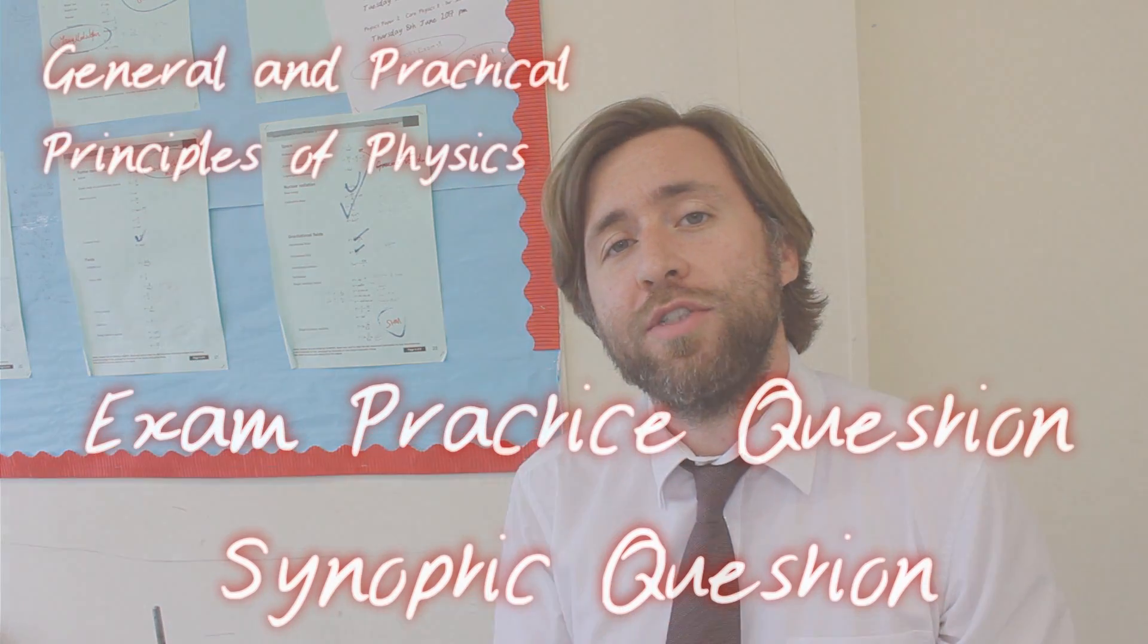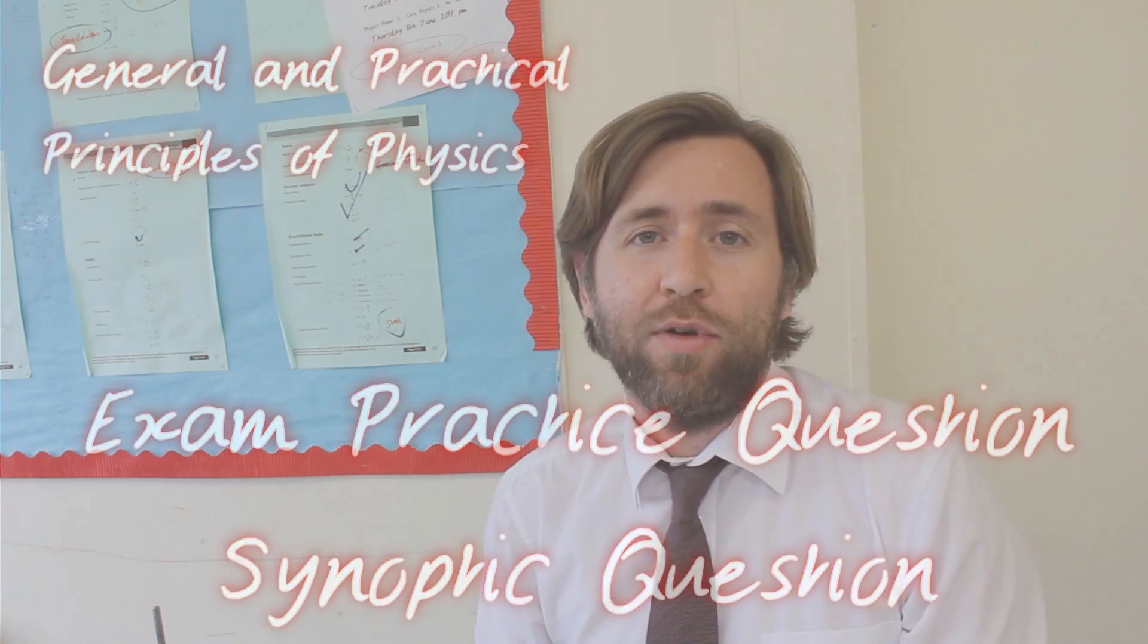I quite like this question actually because it's one of those synoptic bits that you can actually prepare for. This is a synoptic link between gravitational fields and electrostatic fields. It's actually comparing their size within the atom, but then there's other synoptic bits as well, bringing in circular motion and de Broglie wavelength. So you've got to know that equation sheet really well and know the clues that point you at different equations.